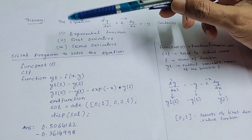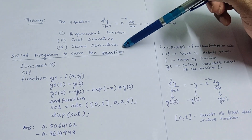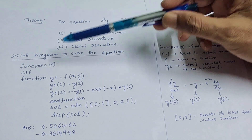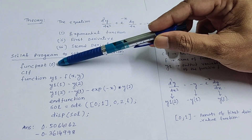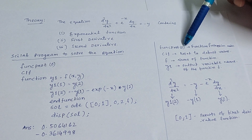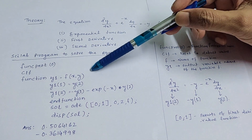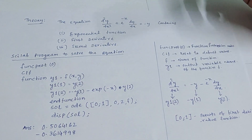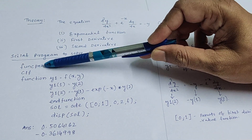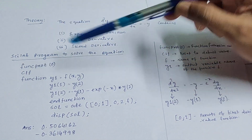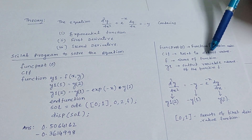In the Scilab program, we first write funcprot(0). This is a function protection mode — the function you are writing must be in protection mode, which is why you write funcprot(0). Then write clf, which resets the environment to default values.